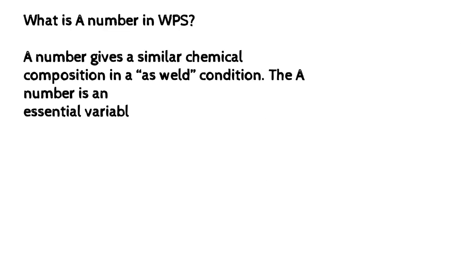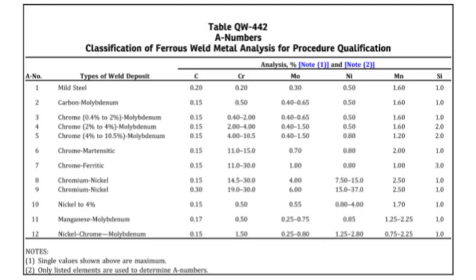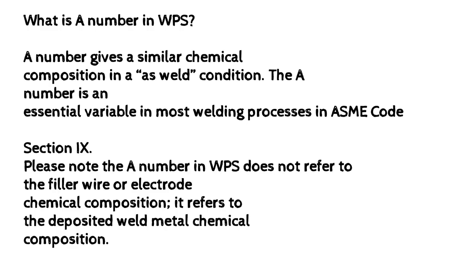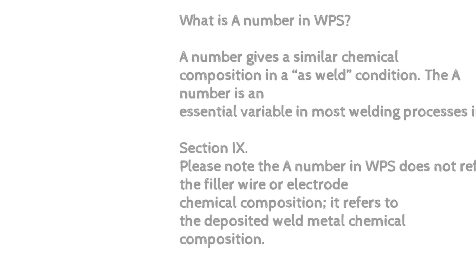What is the A number in WPS? The A number gives a similar chemical composition in the as-weld condition. The A number is an essential variable in most welding processes in ASME Code Section IX. Please note the A number in WPS does not refer to the filler wire or electrode — it refers to the deposited weld metal chemical composition.